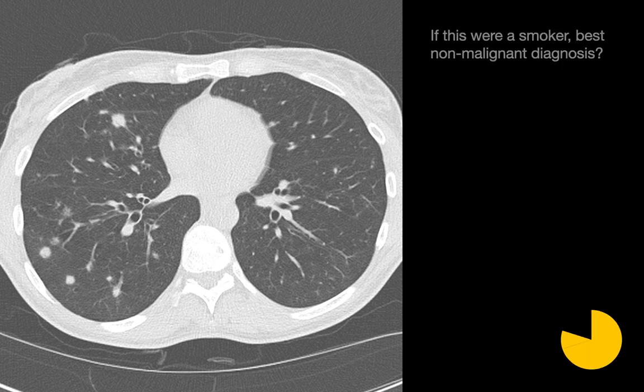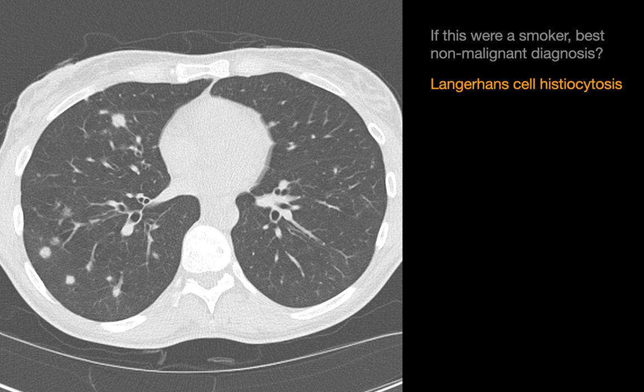If this were a smoker, what would your best non-malignant diagnosis be? In this case, we see numerous solid lung nodules of varying size, though the largest ones are probably topping out at just about one centimeter. Normally if we see this, we'd think metastatic disease first, but if we're looking at non-malignant diagnoses, especially in a smoker, one of the first things we'd have to think about would be Langerhans cell histiocytosis, or PLCH.